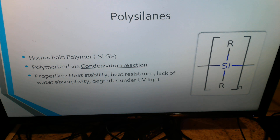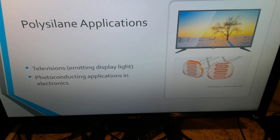The first inorganic polymer we'll be taking a more in-depth look at is polysilane. Polysilanes are an example of a homochain polymer. They are silicon-based and polymerized via a condensation reaction. Some properties of polysilanes are heat stability, heat resistance, lack of water absorptivity, and they also degrade under UV light. Examples of applications include televisions — where they emit display light — and photoconducting applications in electronics. To the right, under the television, you can see an example of a photoconductor, which is often manufactured with the use of polysilanes.